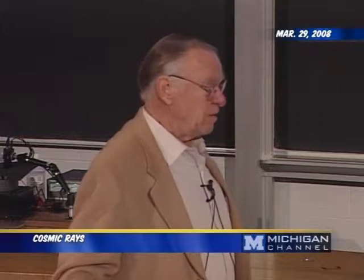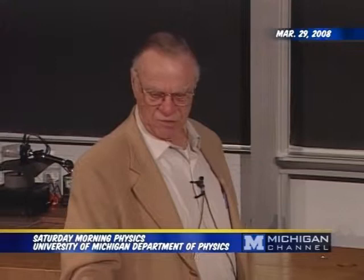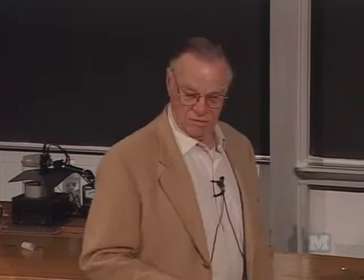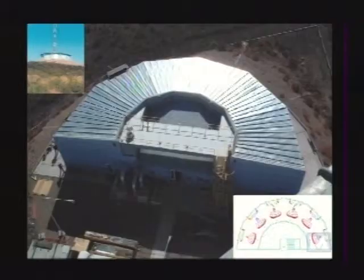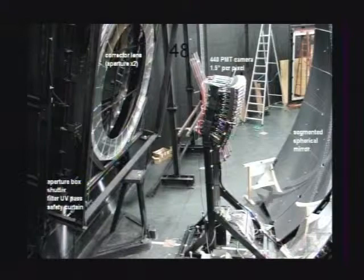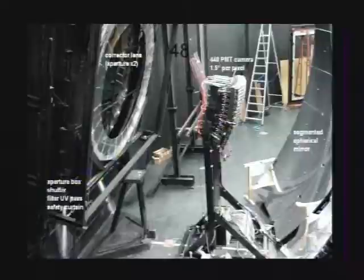This is a photograph of one of the surface detectors — about 10 to 12 feet in diameter and 4 to 5 feet high, with solar panels, and cattle grazing nearby in the field. Inside the atmospheric fluorescence telescope is a spherical mirror, a corrector lens, and an array of 440 photomultipliers — used to look at the atmospheric fluorescence from air showers.